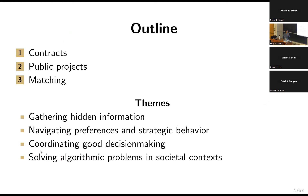In all these cases, there's this interaction of algorithms with incentives and information. Today I'll talk about specific projects in our group along these themes — the challenge of running maybe a very simple decision-making procedure when you have to gather the information you need and interface with people's preferences and possibly strategic behavior. The three projects are: contracts, public projects (how do you get a group of people to agree on what to do), and matching — for example, matching employers to employees — with some newer twists.